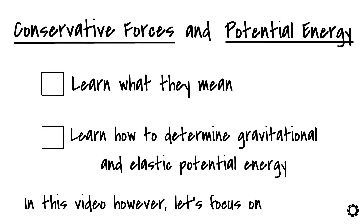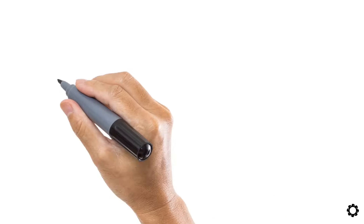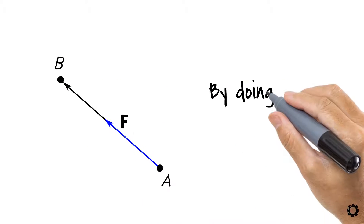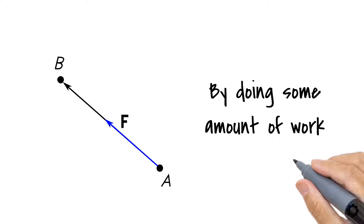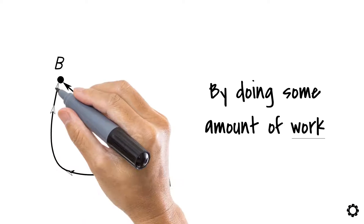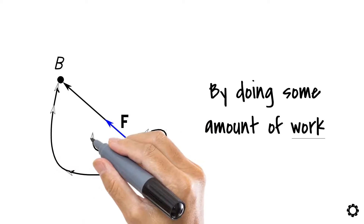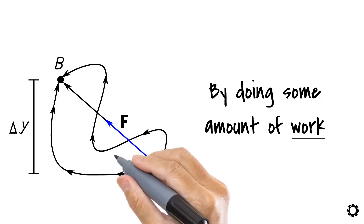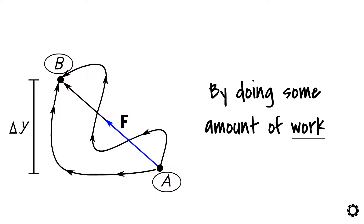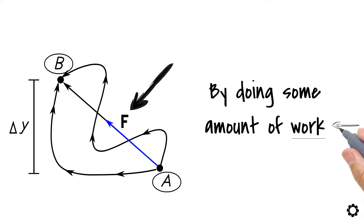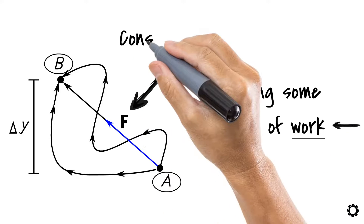As we already know, a force is able to move an object from point A to point B by doing some amount of work. Now if this done work is independent of the path on which the object moves while its location changes between these two points A and B, then we can call the force which is doing work a conservative force.